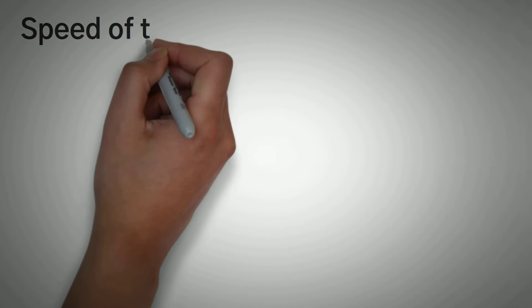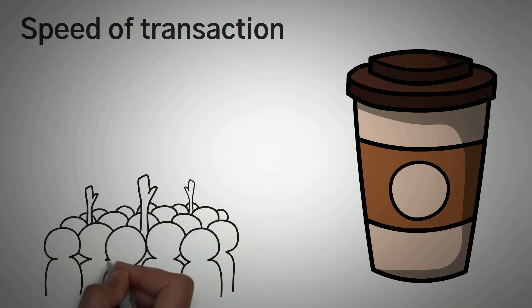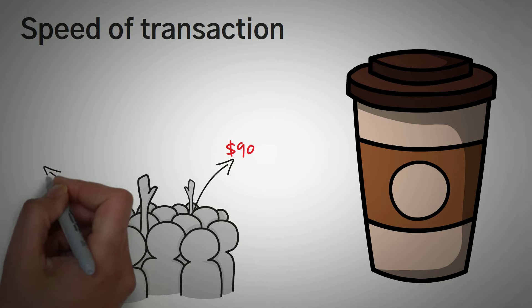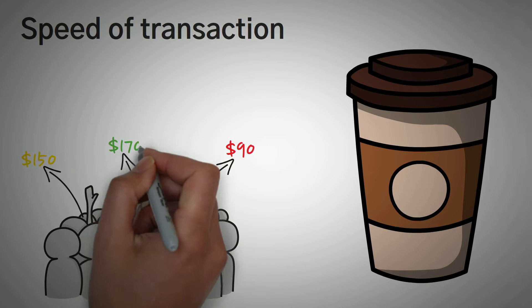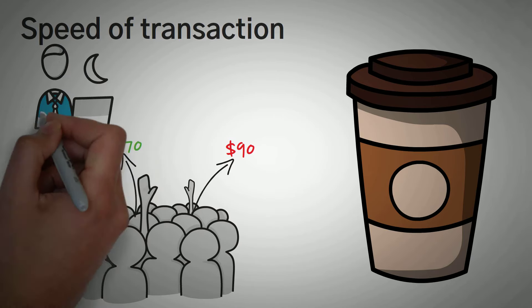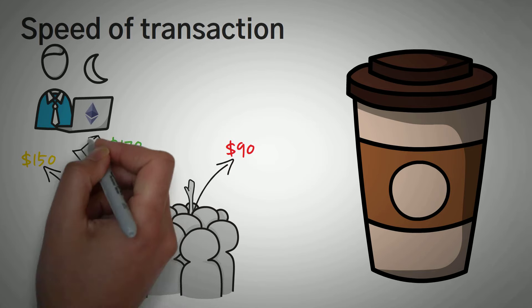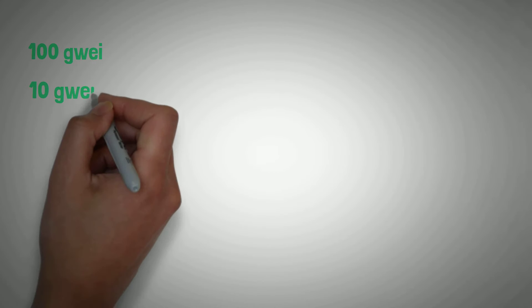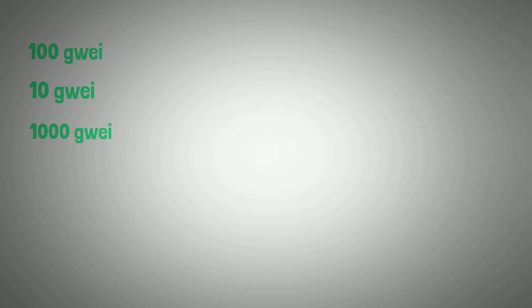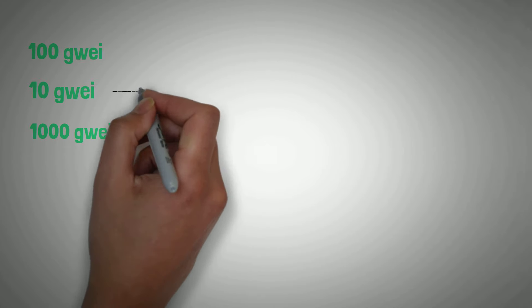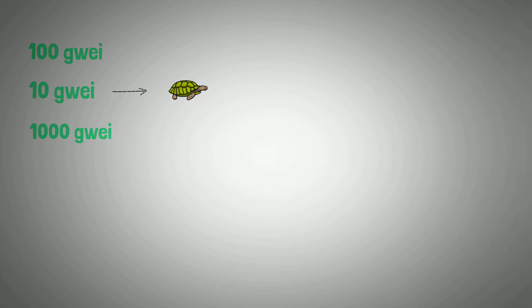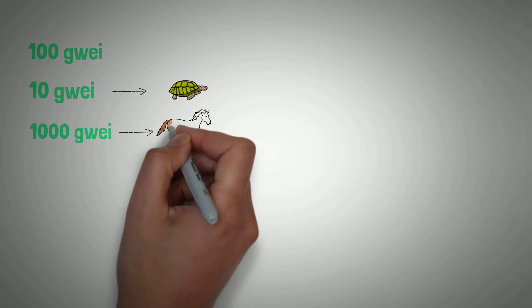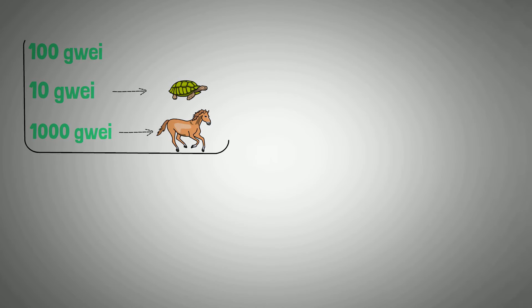The gas price can be different, and this is where we go back to the coffee analogy. There are people standing in line for coffee, and the people willing to pay the most get their coffee first. Since Ethereum miners can only include a certain number of transactions per block, they pick whichever ones pay them the most. You could spend 100 GWEI, 10 GWEI, or even 1,000 GWEI if you wanted to. If you spend 10 GWEI it might take a few hours to confirm, but if you spend 1,000 GWEI it could be confirmed almost immediately — it really depends how bad you want your coffee.